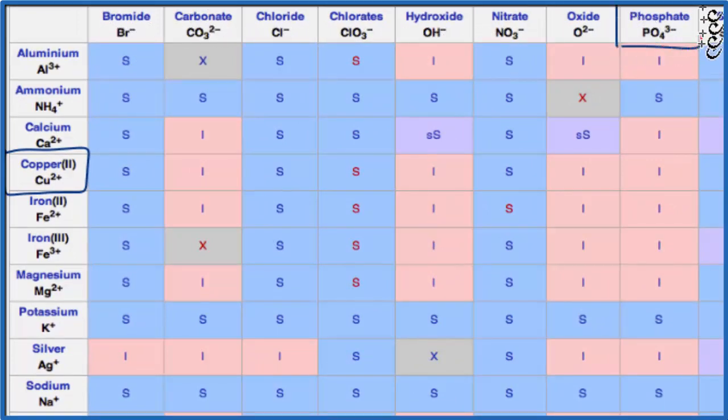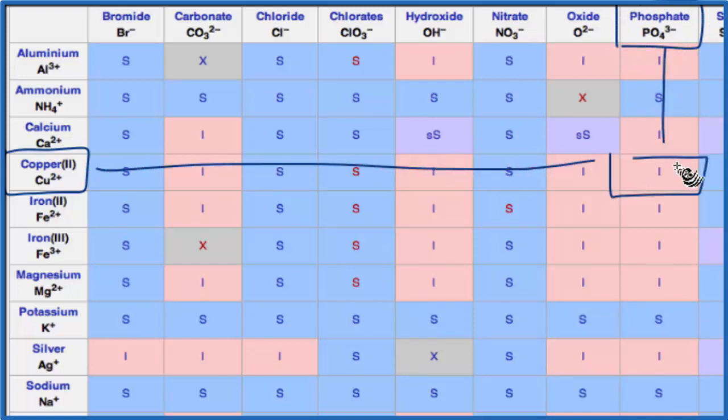So we go over and down, and we see that copper 2-phosphate has a little I here. That means it's insoluble.